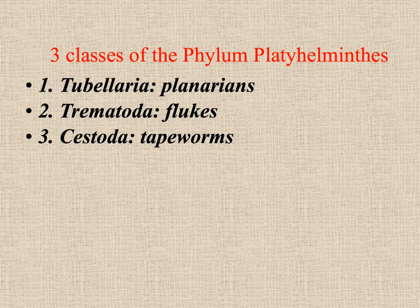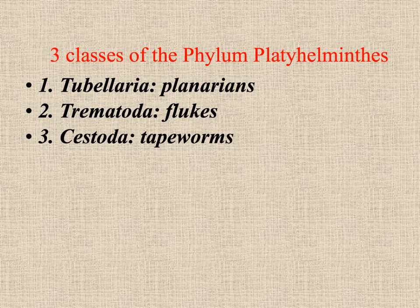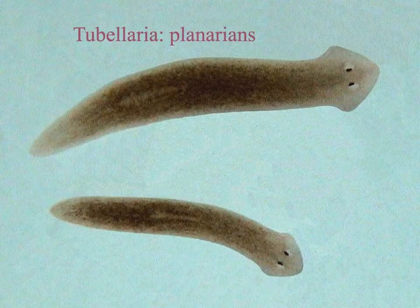With the worms, we will be looking at the phylum Platyhelminthes and three classes: the Turbellaria, which are the planarians; the Trematoda, which are the flukes; and the Cestoda, which are the tapeworms.